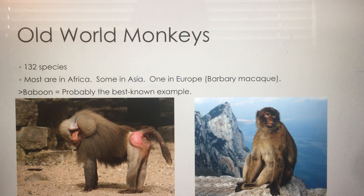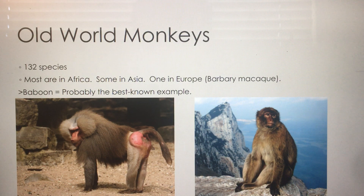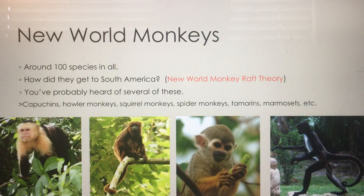Old world monkeys have quite a bit of diversity — 132 species in all. Most are from Africa, a few from Asia, and there is actually one from the mountains of Europe. The one you probably know best is the baboon. The red coloring on a female baboon's behind is a sign of attractiveness and sexual maturity — when it turns red, it signals she's ready to breed. A little biology for you.